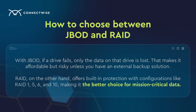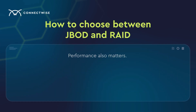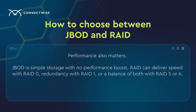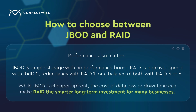RAID, on the other hand, offers built-in protection with configurations such as RAID 1, 5, 6, and 10, making it the better choice for mission-critical data. Performance also matters. JBOD is simple storage with no performance boost. RAID can deliver speed with RAID 0, redundancy with RAID 1, or a balance of both with RAID 5 or 6. While JBOD is cheaper up front, the cost of data loss or downtime can make RAID the smarter long-term investment for many businesses.